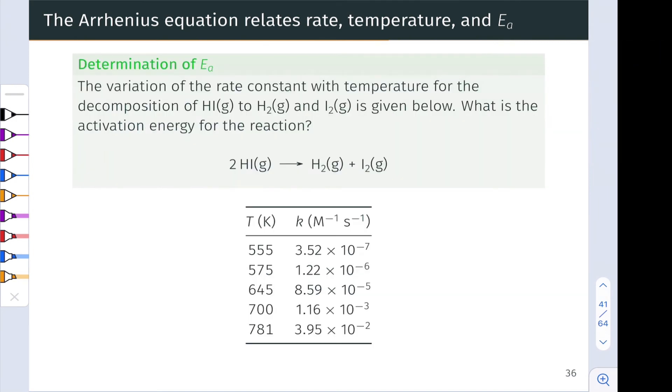The beauty of the Arrhenius equation is that we can use it in conjunction with measurements of the rate constant as a function of temperature to infer the values of the activation energy and frequency factor. And this problem gives us a taste of how this process works. In this problem, we measured the rate constant as a function of temperature for the decomposition of HI to H2 and I2. And the results of those measurements are given in the table that you see here. What we want to know is what's the activation energy for the reaction? Well, we've got K as a function of T and that suggests that the Arrhenius equation is going to be relevant.